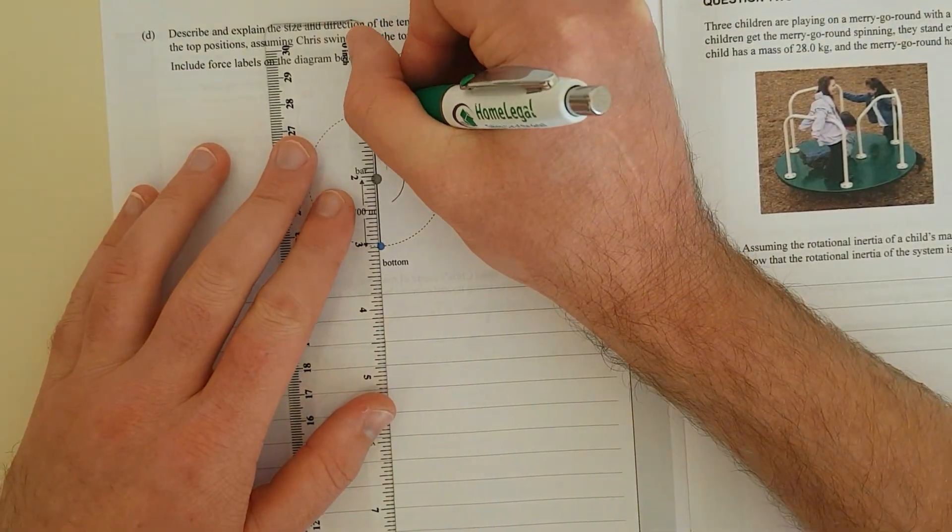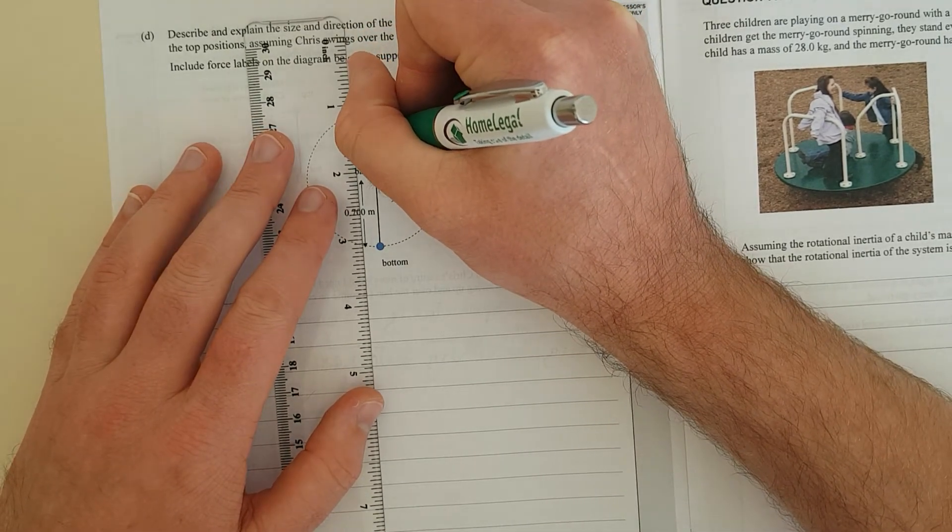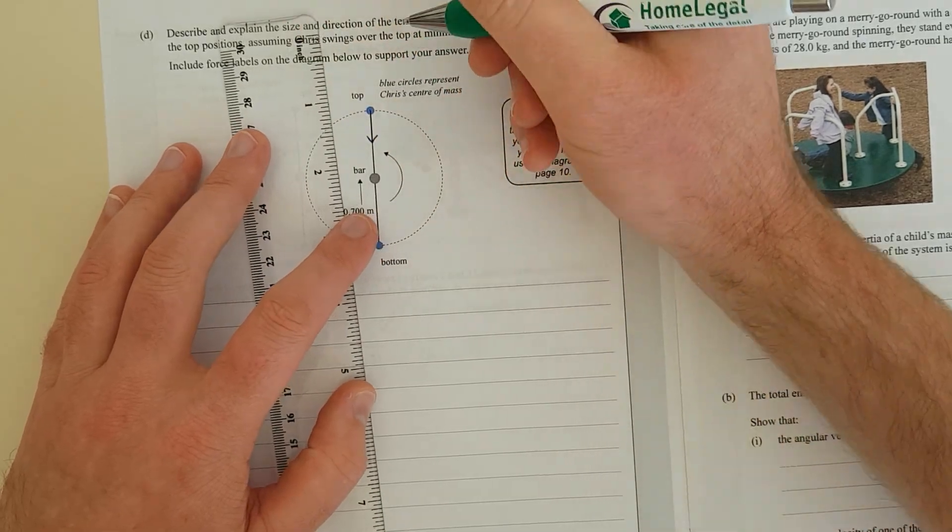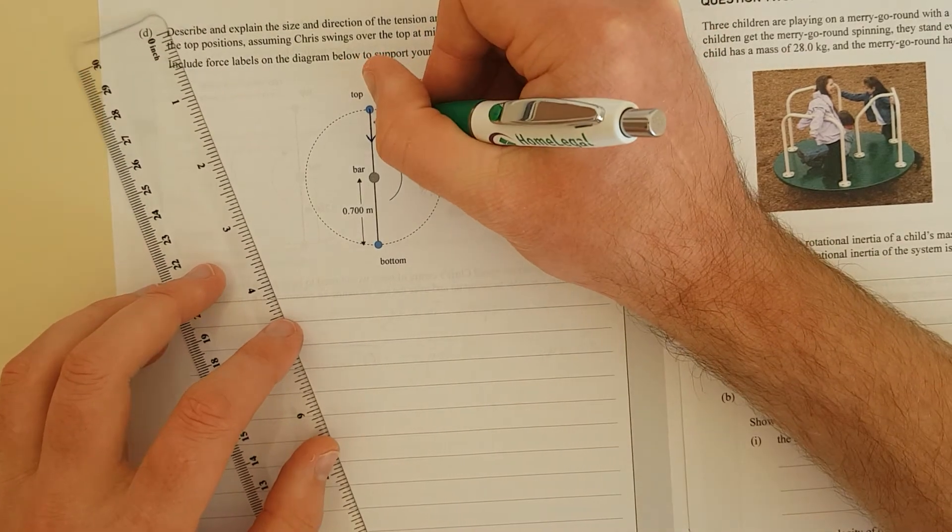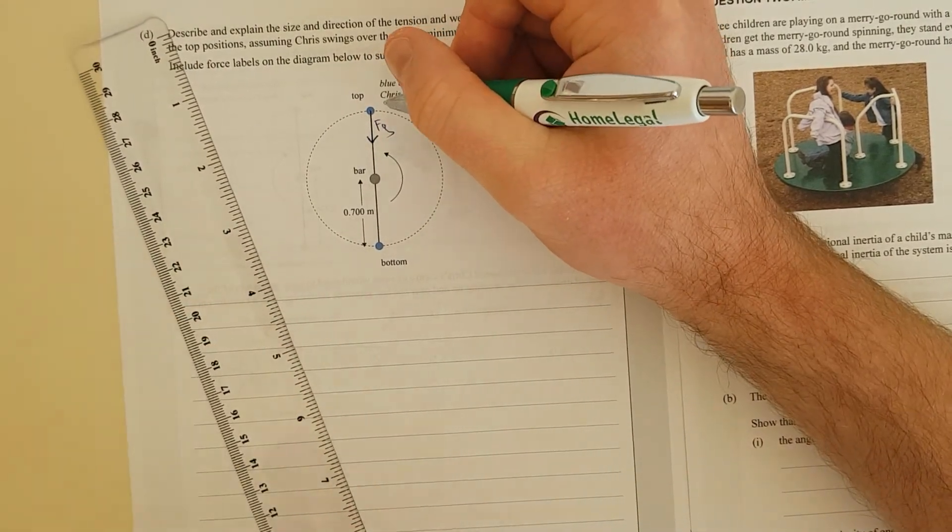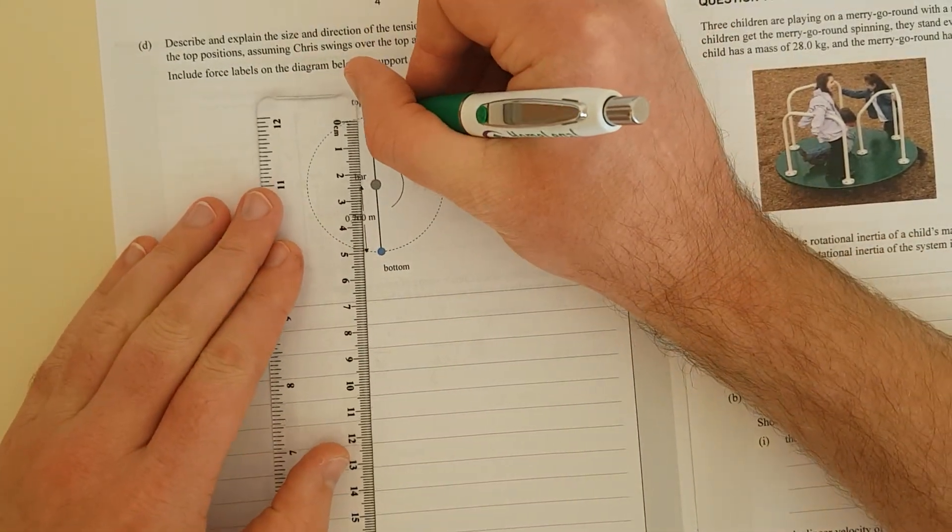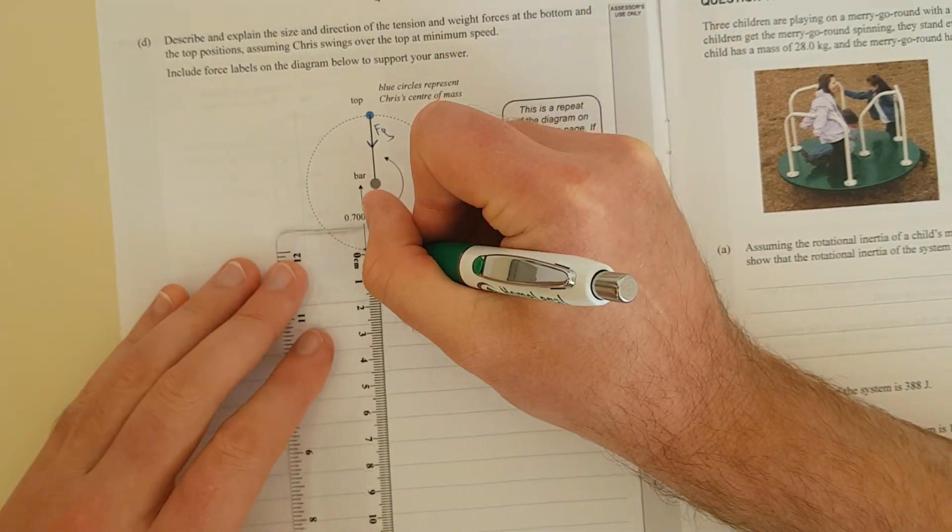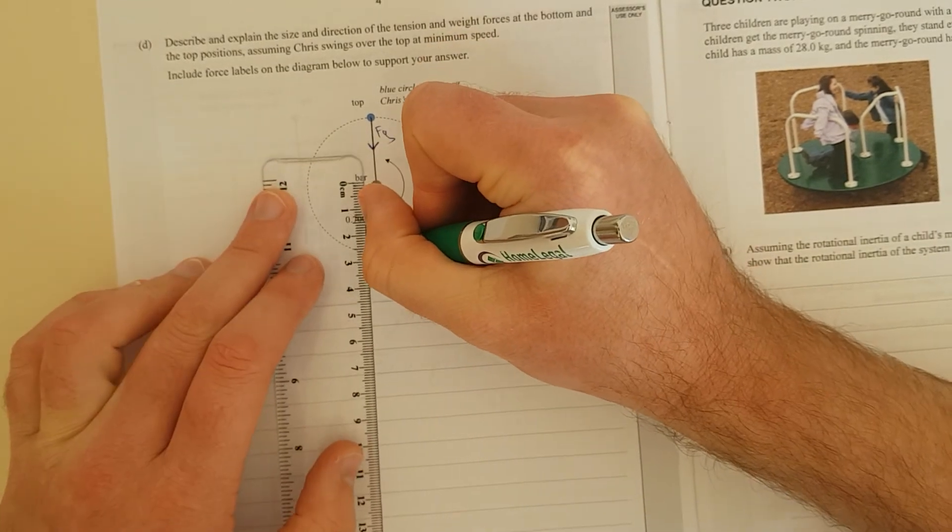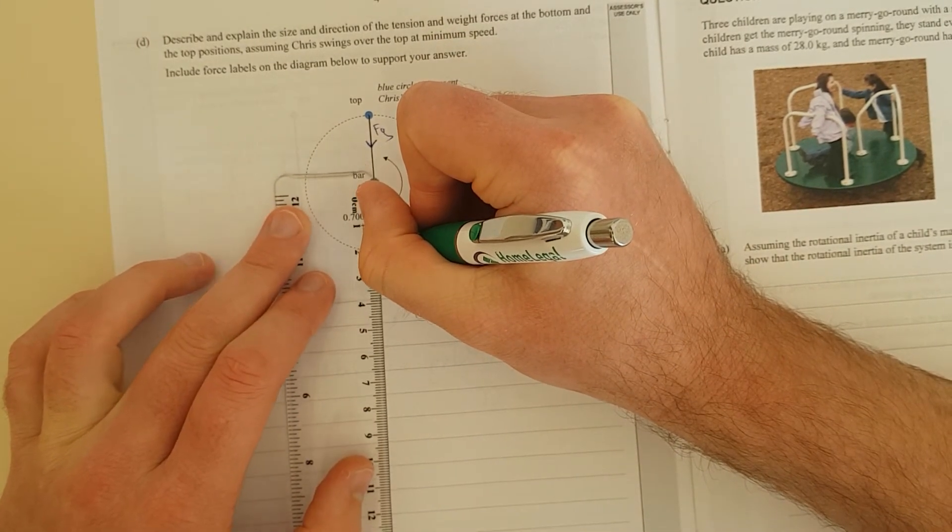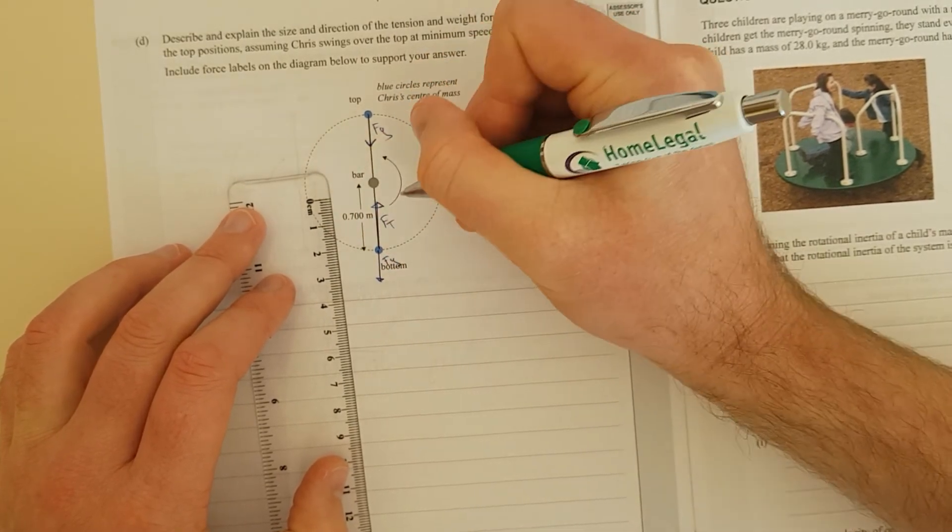I need to get my ruler and do my free body diagram. First I'm going to do the labeled forces. At the top, at minimum speed, this is going to be Fg because that's gravitational force. I'll measure that with my ruler—that's 1.2. It needs to be exactly 1.2 at the bottom because weight force won't change. Now the tension force is going to have to be bigger than 1.2, so we'll make it about 1.8. And this is going to be Ft.